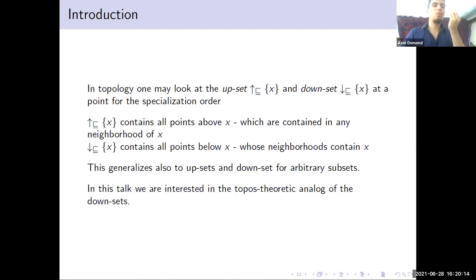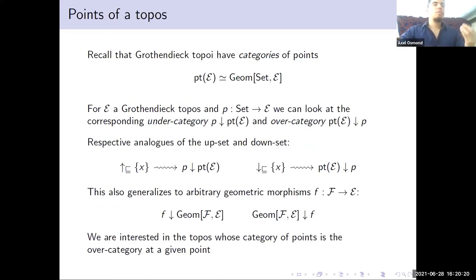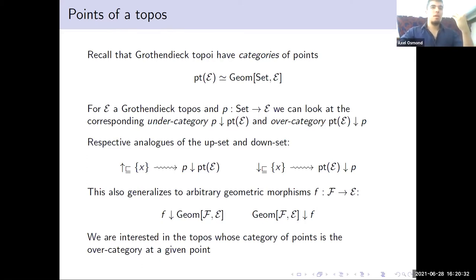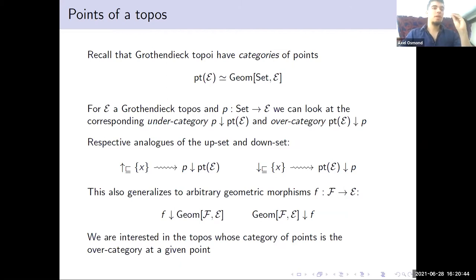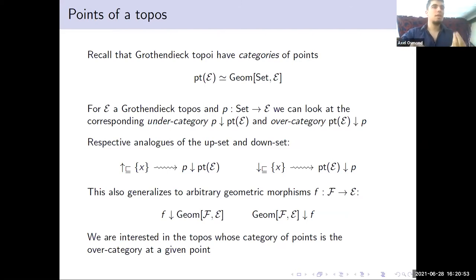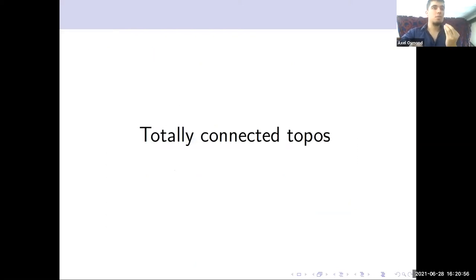In this talk we are interested in the topos-theoretic analog of the downset. Recall that a Grothendieck topos has a category of points, which are the geometric morphisms from Set into this topos. You can also look at the under-category and the over-category at a given point, and those are the analogs of the upset and the downset respectively. This generalizes to arbitrary geometric morphisms, where you can look at the over-category of the hom-category of geometric morphisms at a fixed geometric morphism.